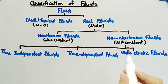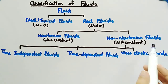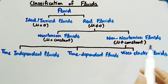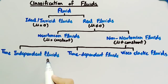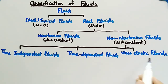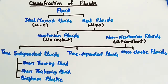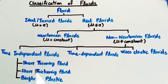Non-Newtonian fluids are further divided into three categories: time-independent fluids, time-dependent fluids, and viscoelastic fluids. Types of time-independent fluids are shear thinning fluid, shear thickening fluid, and Bingham plastic.